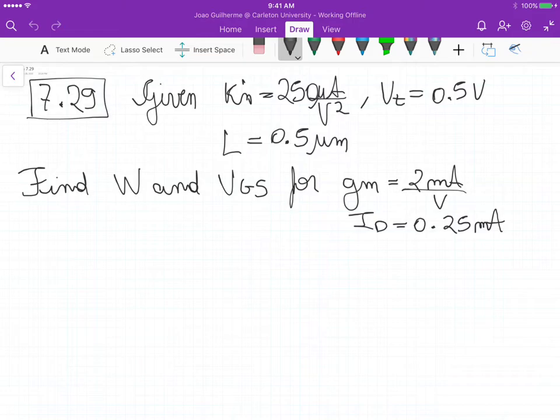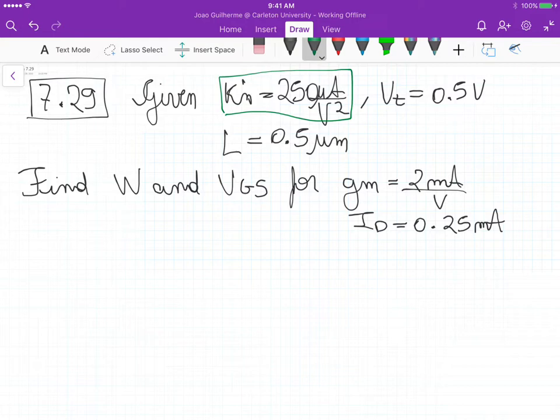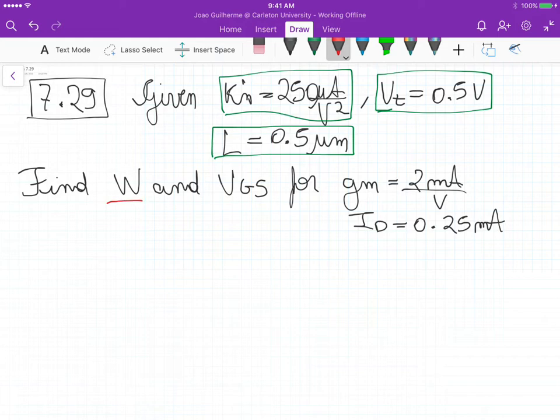This problem is 7.29. From this problem we know the process transconductance, KN', the threshold voltage for a transistor. It's an NMOS transistor, so the threshold voltage is 0.5 volts and the length of the channel is 0.5 micrometers.